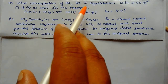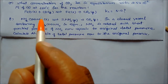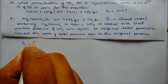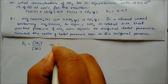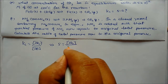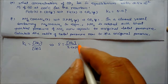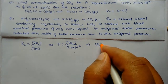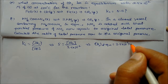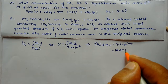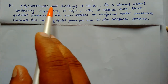Next problem: what concentration of CO2 is in equilibrium with 2.5 × 10⁻² molar CO at 100°C? Using the given Kc expression, the concentration of CO2 at equilibrium is found to be 2.5 × 10⁻² molar. This is our answer.